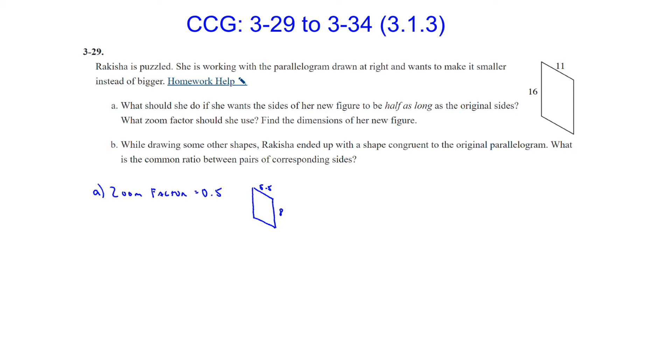Part B. While drawing some other shapes, Rika Shaw ended up with a shape congruent to the original parallelogram. What is the common ratio between pairs of corresponding sides? Since the shape is congruent to the original parallelogram, the common ratio between the pair of sides is 1 to 1, and the reason is because it's congruent. If it's congruent, it's exactly the same shape in terms of the size. So there's no zoom factor, the zoom factor is just 1. It's 1 to 1 because it is congruent.